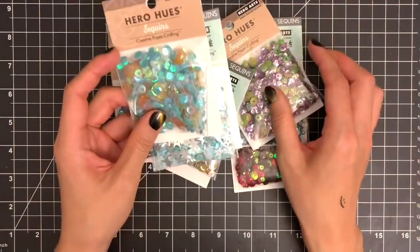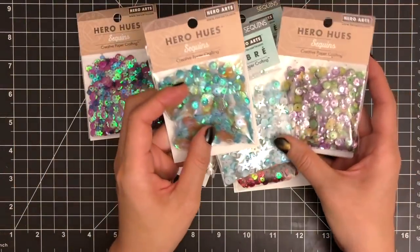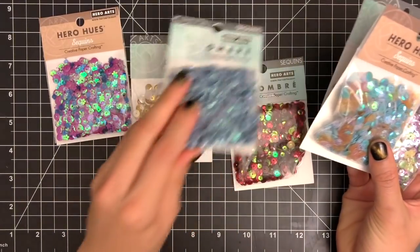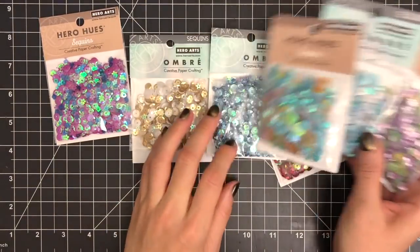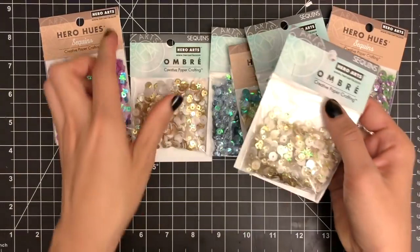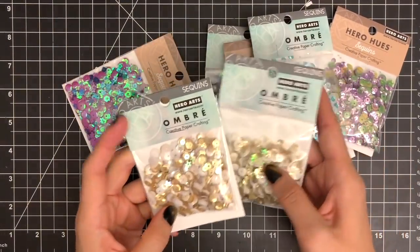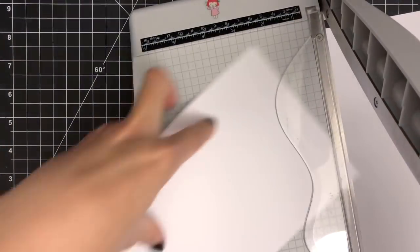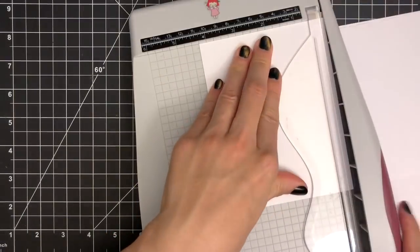Here are a variety of sequins from Hero Arts. Each pack contains a unique mix of colors, sizes, and shapes. These are great for shaker cards and as a pop of color to embellish any card. I'm cutting down my white cardstock into 4.25 inches by 5.5 inches out of Hero Arts snow layering paper using Tim Holtz paper trimmer.